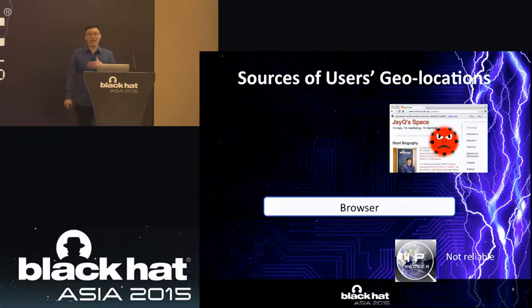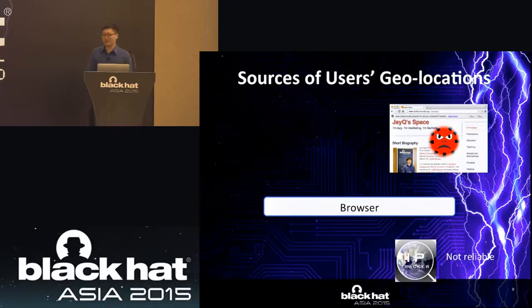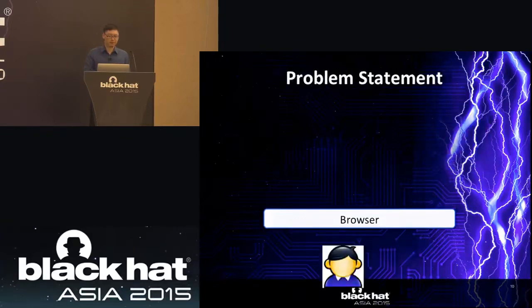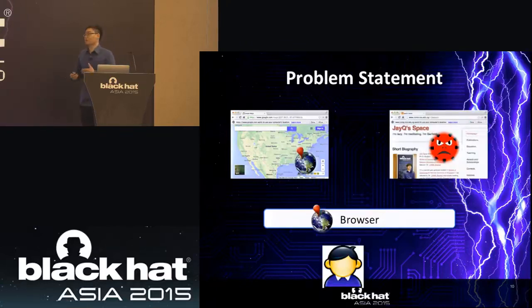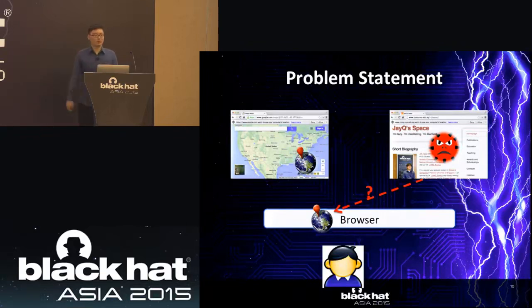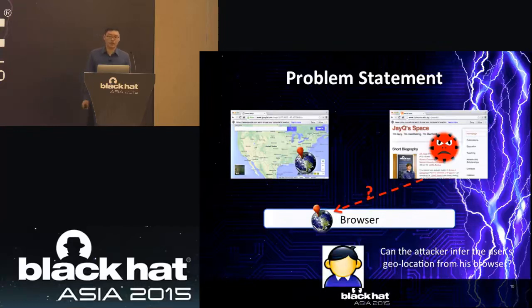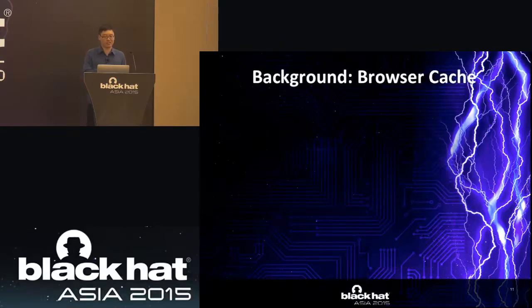For trusted websites, we already allowed them to access our geolocations from any of these three sources. For untrusted websites, we're not willing to provide this. So the only source is IP tracking. However, from a recent study, we found that it's not reliable — more than 90% of mobile devices in Seattle are not located in Seattle based on IP tracking. Also, hackers and professional users use VPN or Tor to hide their real IP addresses. Since untrusted websites share the same browser with trusted websites, can an attacker infer geolocation from the same browser? After this talk, you'll know the answer is yes.